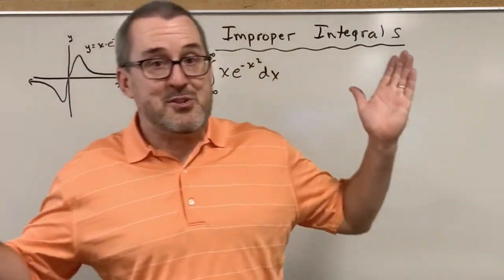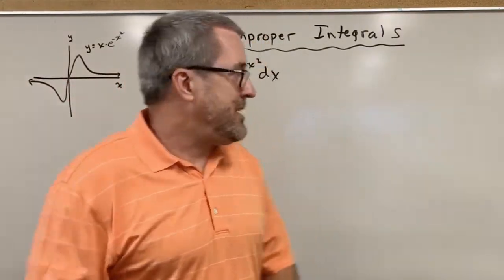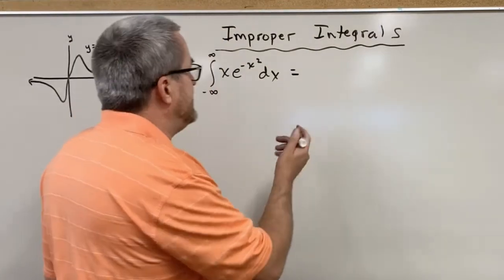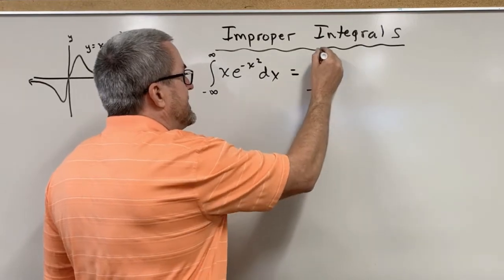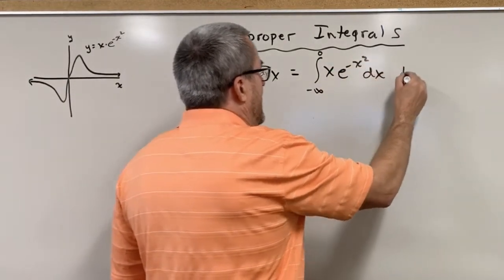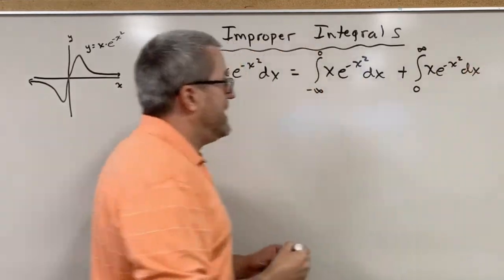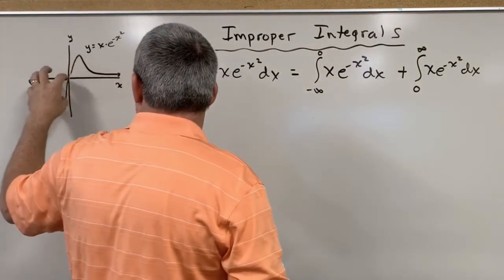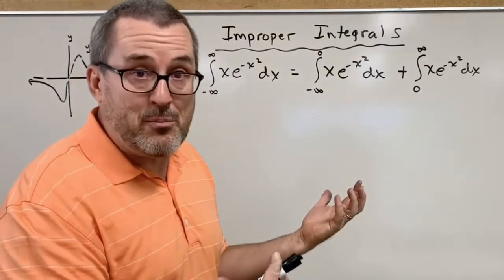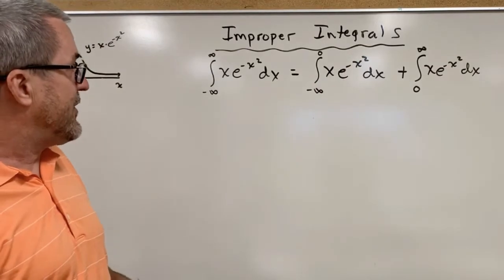It sure does appear that if we were to accumulate area underneath this curve, due to symmetry we would get some negative area and some positive area, and the overall result would be zero. So what we're going to do to confirm that is break up those two area pieces into two parts: we're going to integrate from negative infinity up to zero, and then add the integral from zero to infinity. We'll accumulate the negative area on the left and the equal positive area on the right, so the sum will indeed be zero.